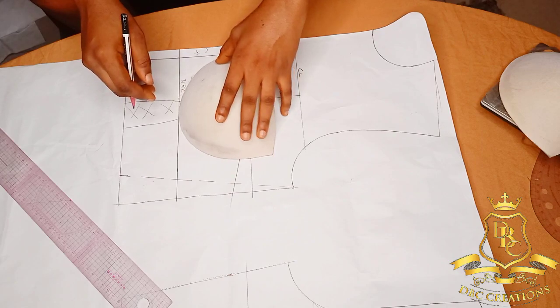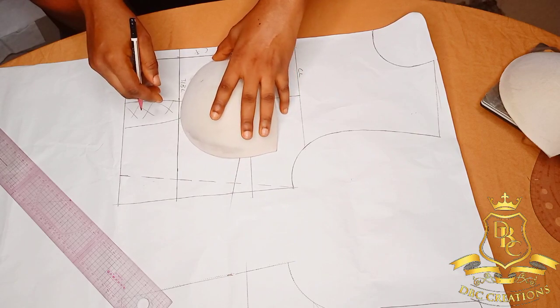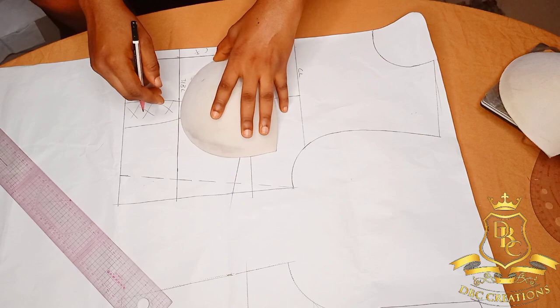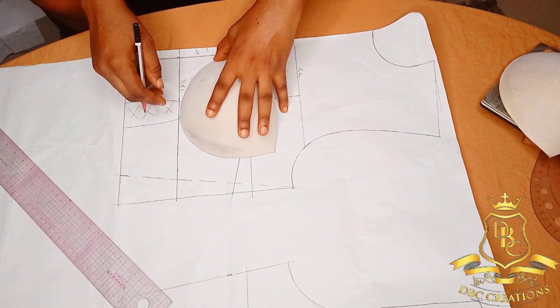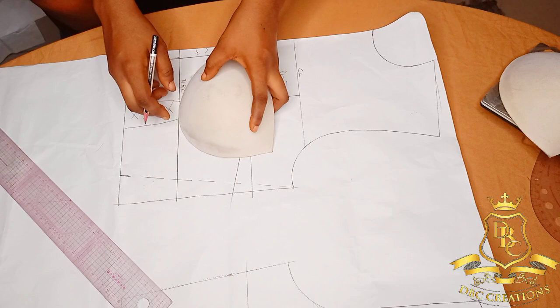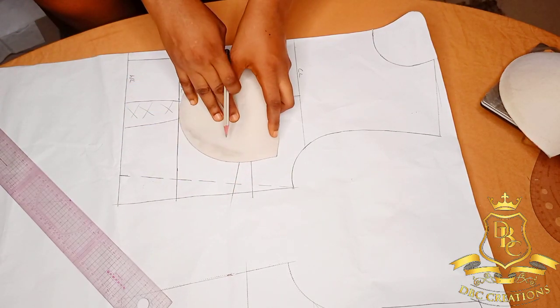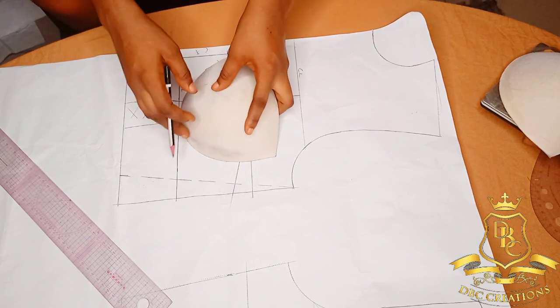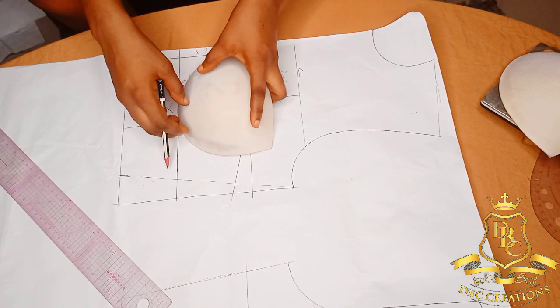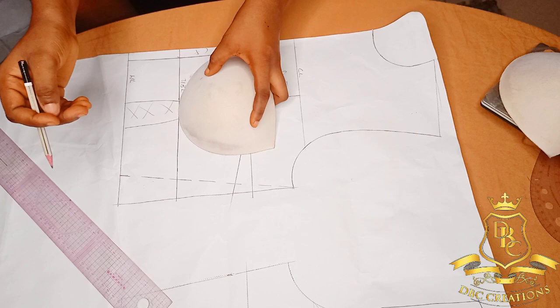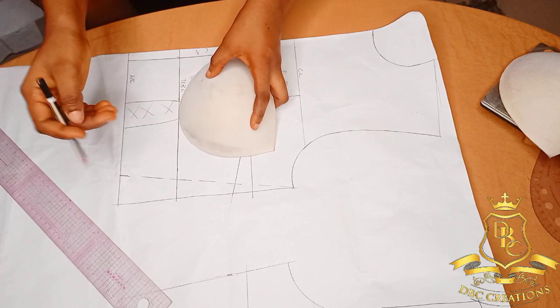So I will place my cup and start shifting it slanty. Just hold your cup, don't press your cup like this and then curve. Don't press it, just hold it so that the cup will be up and you will get what you want.